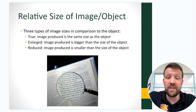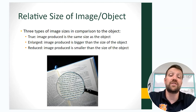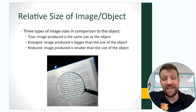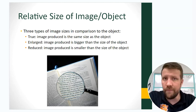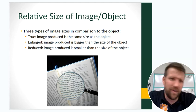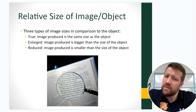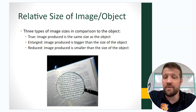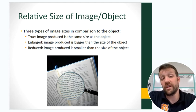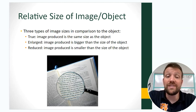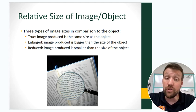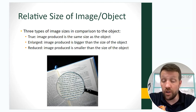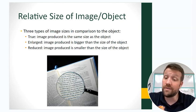Relative size of images: there are three types. A true image size shows the image as exactly what it is — like a flat plane mirror. An enlarged image gets bigger, like using a magnifying glass to make words larger. A reduced image makes something smaller based on whatever need we might have.